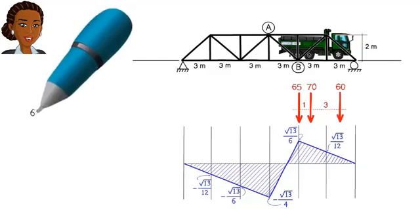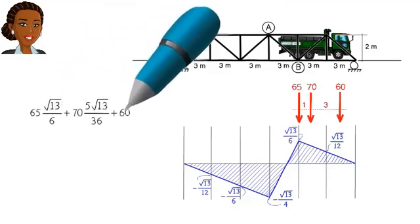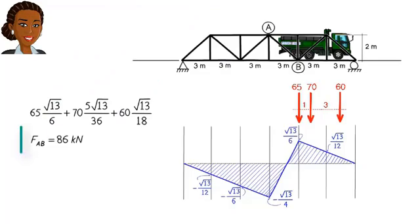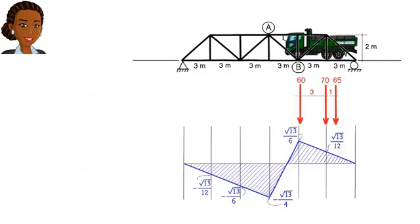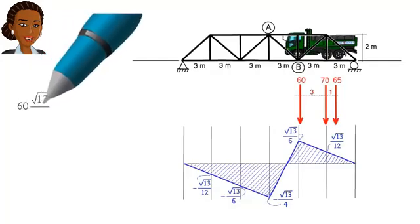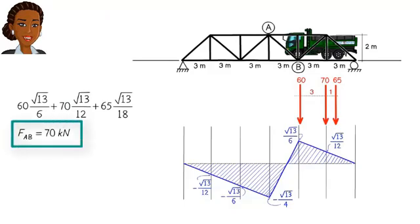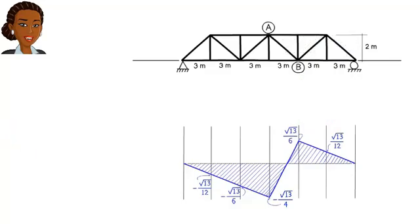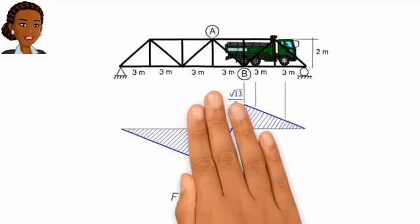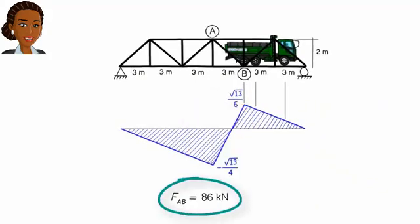For scenario one, we can calculate the tensile force in AB like this. For scenario two, we get a tensile force of 70 kilonewtons. Since there is no other loading scenario that could produce a larger tensile force in AB, we can therefore conclude our analysis by stating that the maximum tensile force in AB is 86 kilonewtons. This force develops when the truck is in this direction and location.